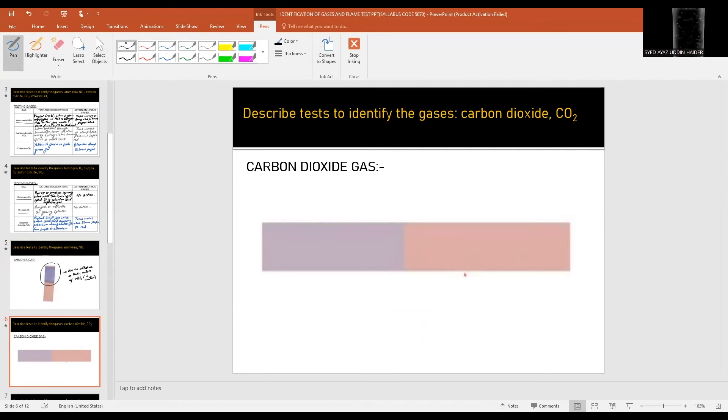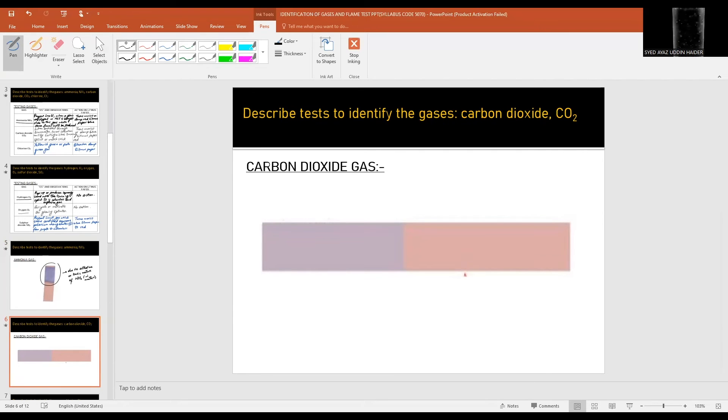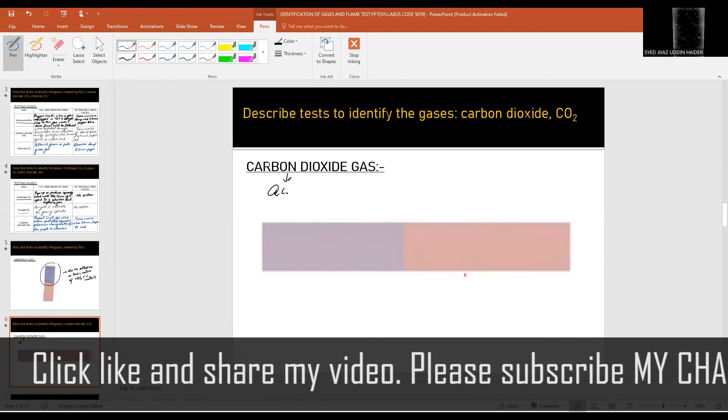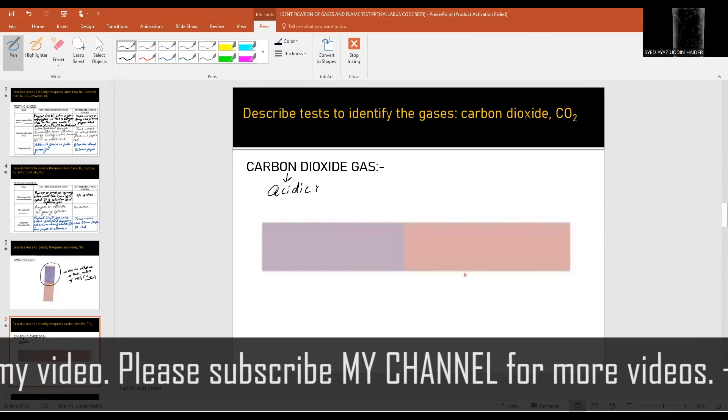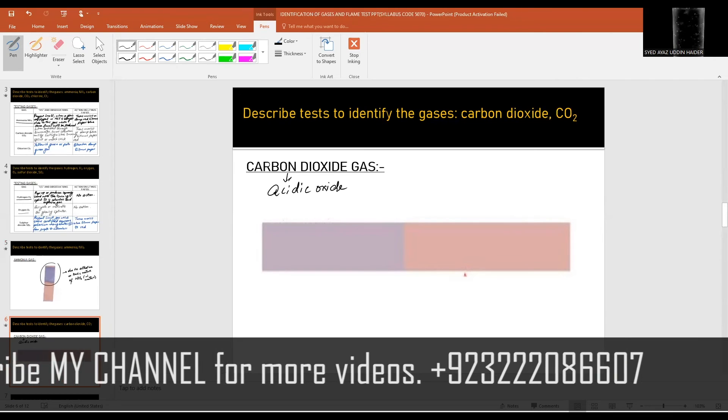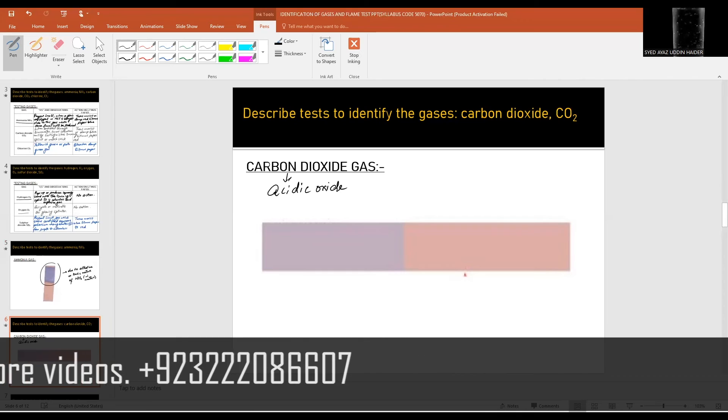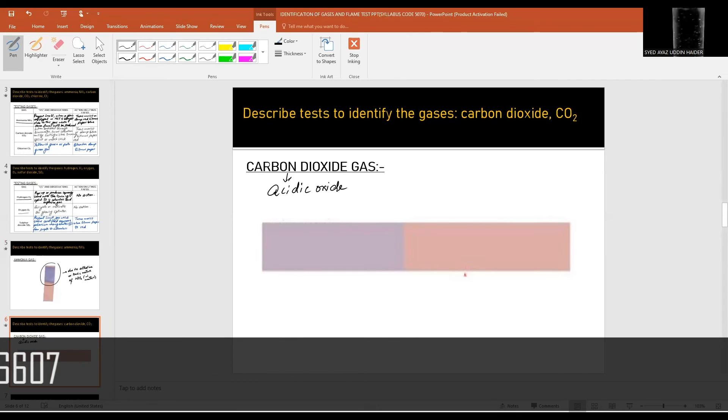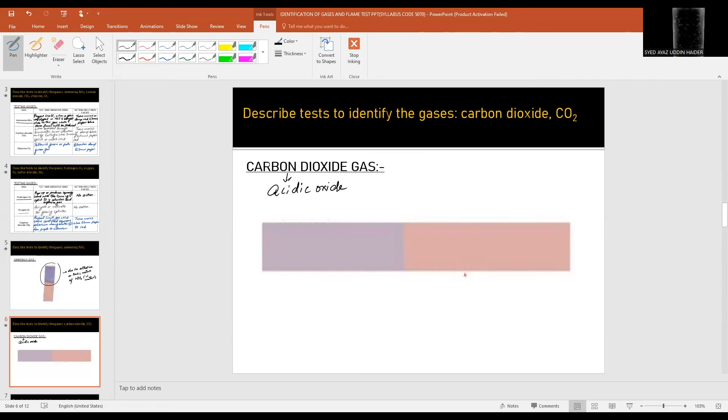Carbon dioxide gas is an acidic oxide. And we know that with the exception of water, carbon monoxide, and nitrogen monoxide, all the other non-metal oxides act as acidic oxides. Therefore it turns moist blue litmus paper red color you will obtain.